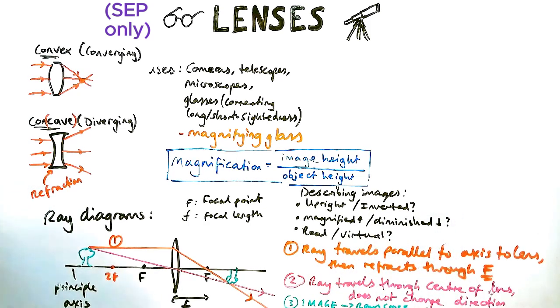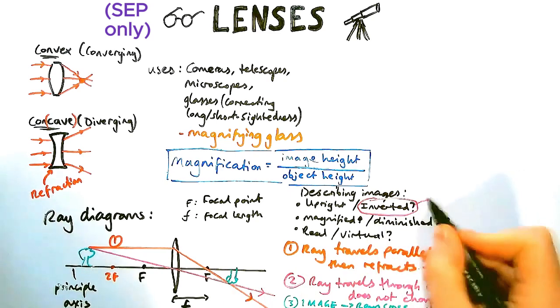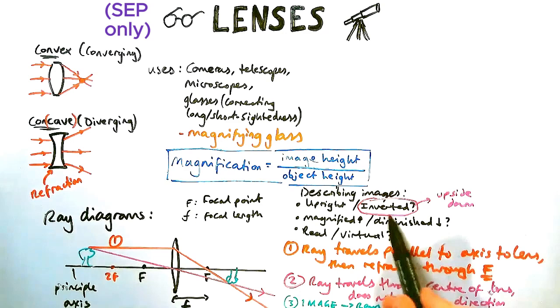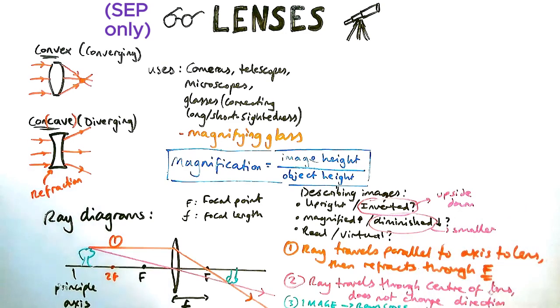So let's go through each of these criteria with my diagram. We just talked about, it's inverted, it's upside down. It's also diminished, it's a bit smaller than the object that originally caused it. And it is a real image.